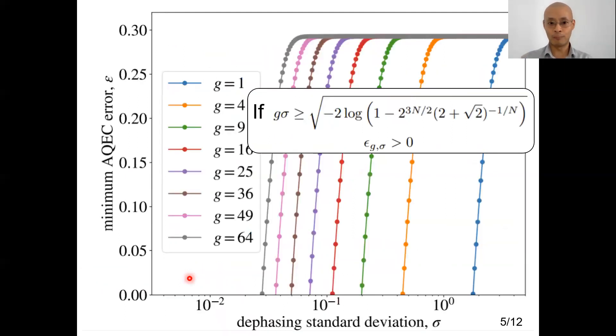So this gives us our plots. So for example, if your g is one, which means any bosonic code, then you have a minimum approximation error that's over here, given your value of standard deviation over here. And as the value of g, which is the resilience to these so-called shift errors, gets larger, then your resilience against phase errors gets worse.